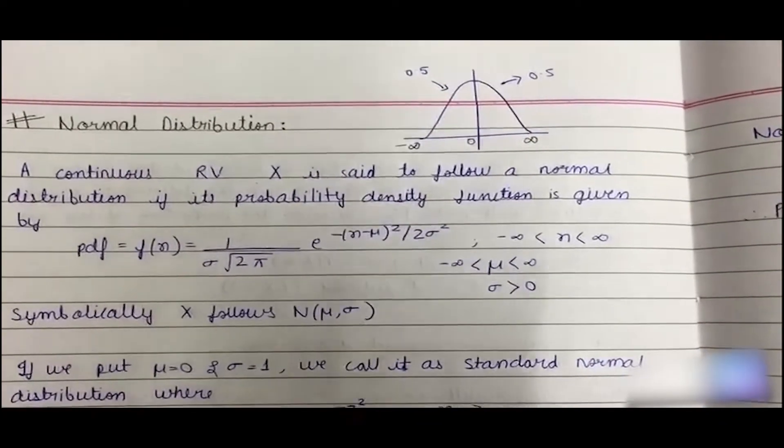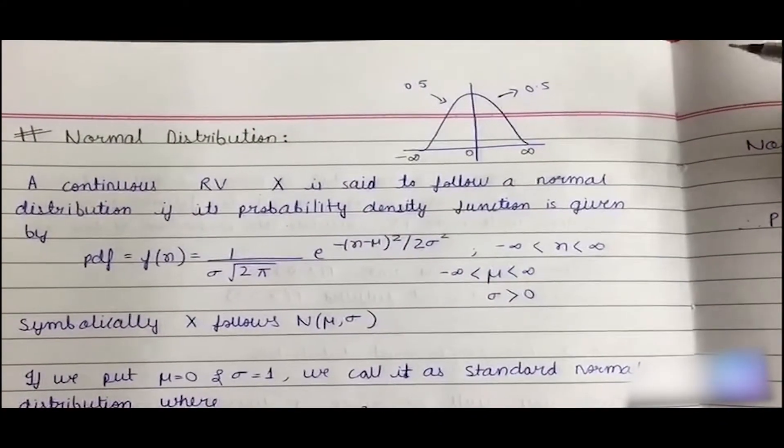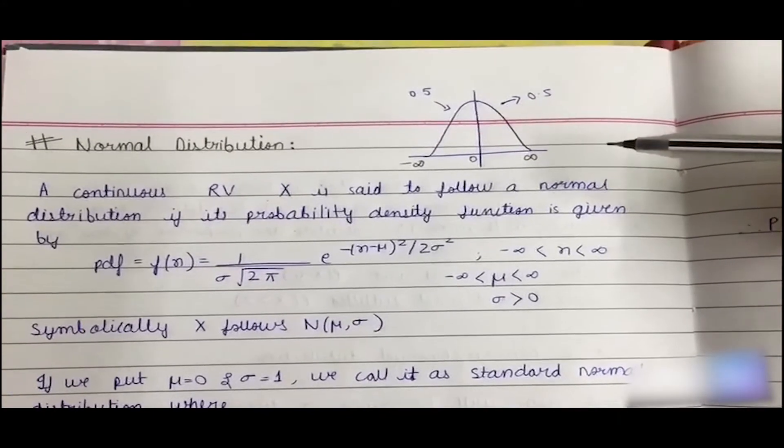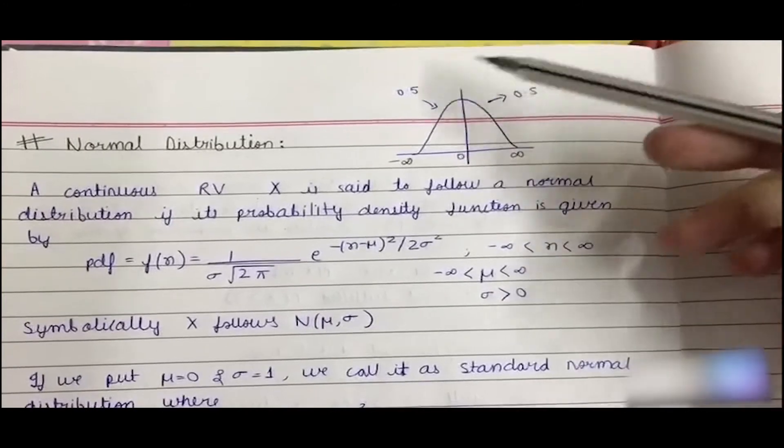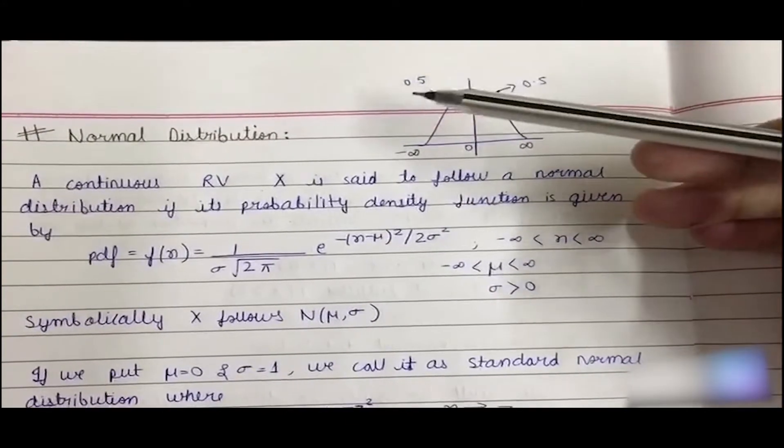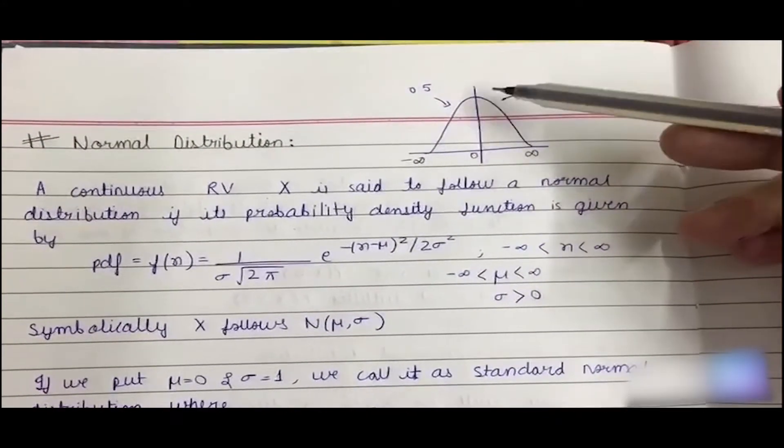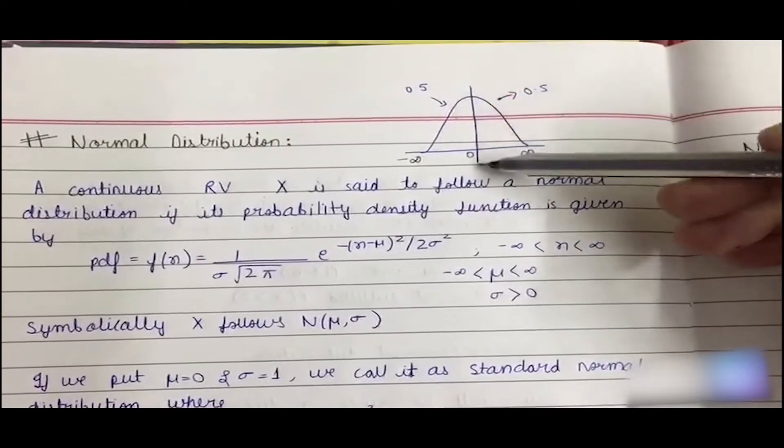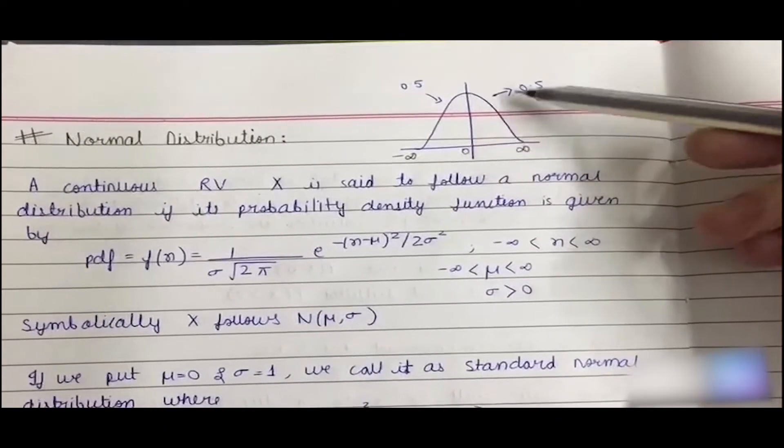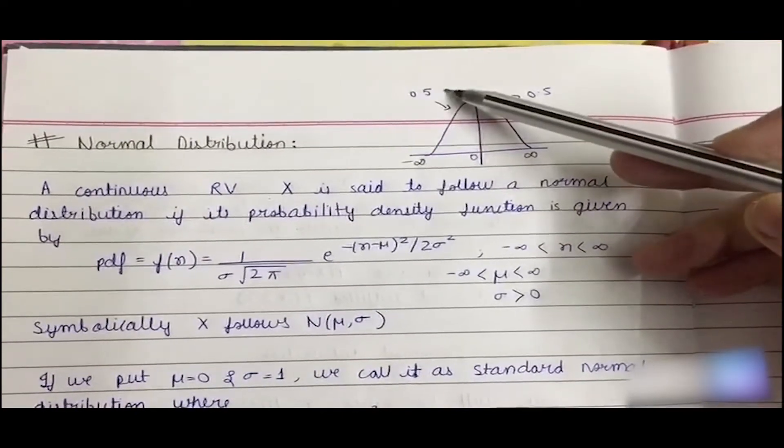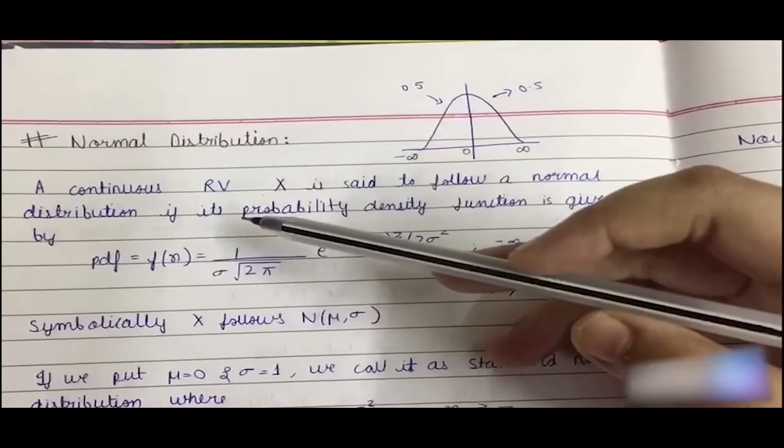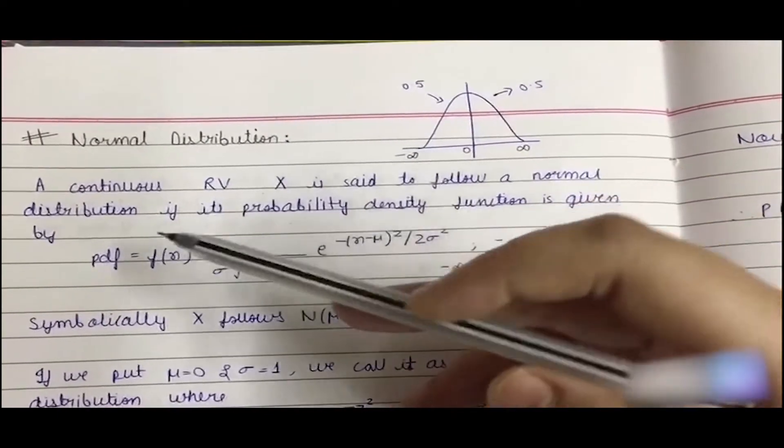Hello everyone, in this video we will be discussing our next portion of module 3, that is normal distribution. This is a simple graph of a standard normal distribution in which the area between 0 to infinity is 0.5, and between 0 to minus infinity is also 0.5.